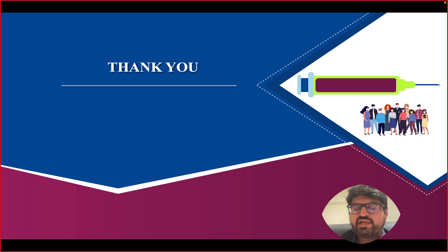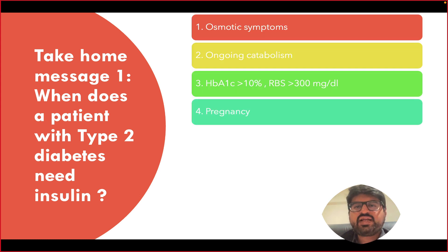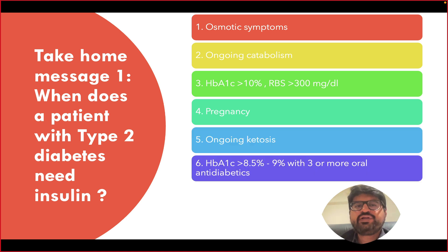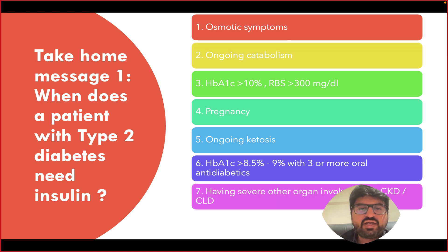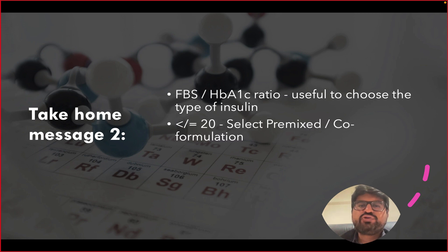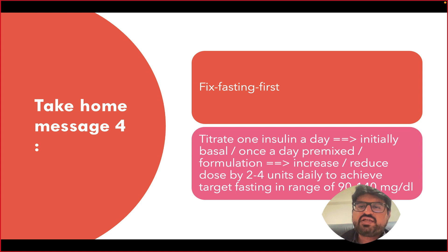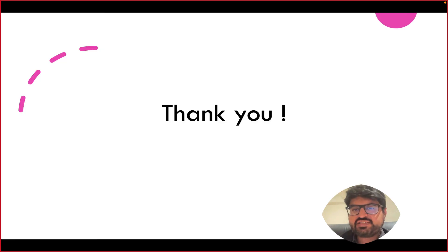Key take-home messages: Initiate insulin if patient has osmotic symptoms, ongoing catabolism, HbA1c >10%, random sugar >300, pregnancy, surgery, ketosis, HbA1c >9% on three or more oral antidiabetics, or organ involvement such as CKD or chronic liver disease. Use fasting blood sugar divided by HbA1c — less than 20 means premix, more than 20 means basal. Dose: fasting blood sugar minus 50 divided by 10. Fix fasting first; increase by 2–4 units targeting 90–140. Add morning premix if HbA1c still high, titrating to pre-dinner sugar of 100–150. The Centurion app is freely available on Android and iOS.